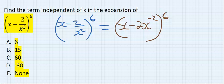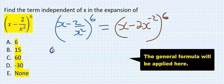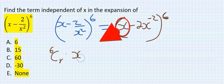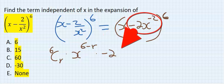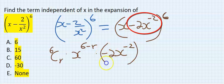Now we are going to start with the formula: 6 combination r, x to the power of 6 minus r, times (minus 2x to the power of minus 2) everything to the power of r.